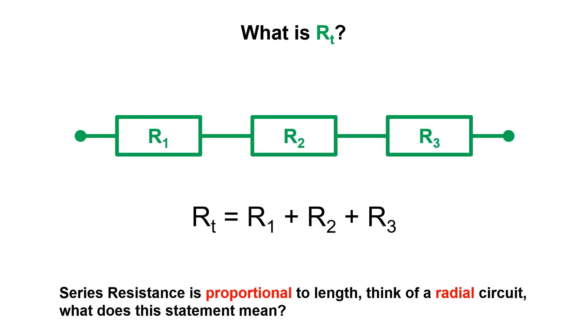First then, a quick reminder that all of our resistances in a series circuit add up to equal resistance total because series resistance is proportional to length. So if you think about a radial circuit, for example, what that means is that as you add length to the circuit, you are also adding in resistance.